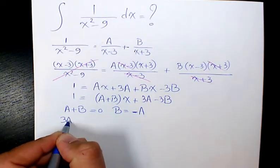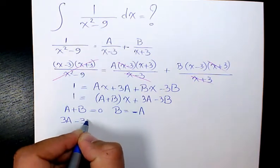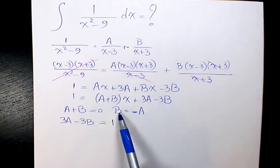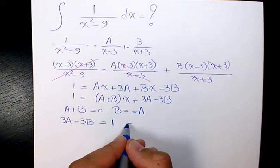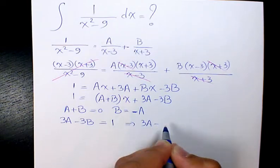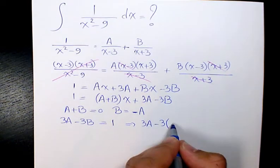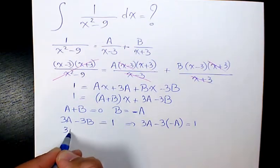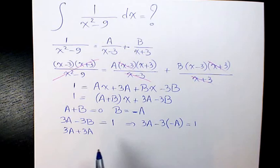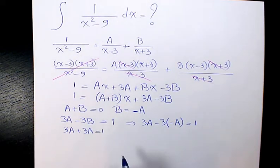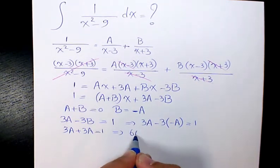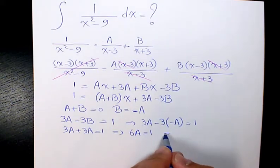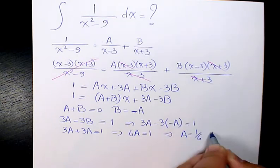Here 3A minus 3B has to be equal to 1. So therefore, instead of B here I'm going to put negative A. So 3A minus 3 instead of B sub negative A equals to 1. Then it will be 3A plus 3A because negative and negative cancel out. 3A plus 3A, 6A equals to 1.